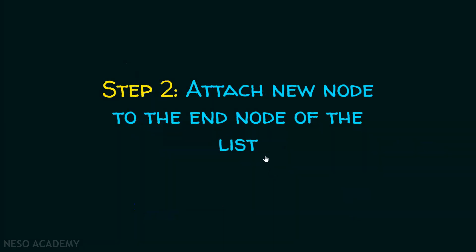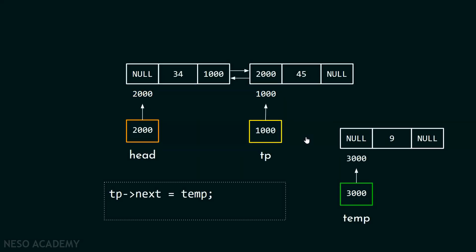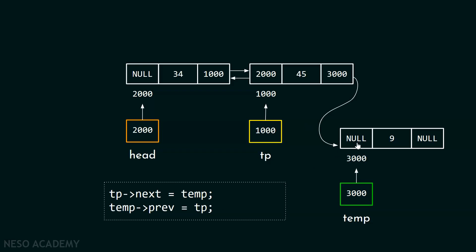After this step, we need to attach the new node to the end node of the list. We first update the next part of the end node so it points to the new node, using: tp->next equal to temp. This puts address 3000 into the next field. Then we add temp->prev equal to tp, to update the prev part of the new node so it points back to the previous end node.